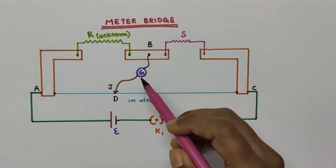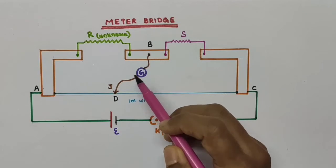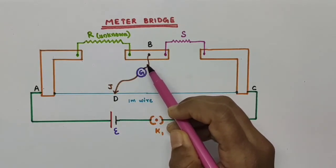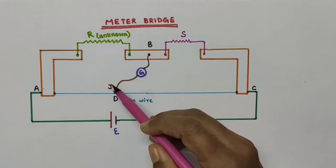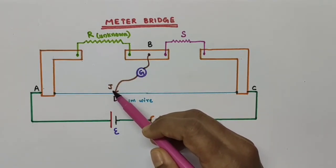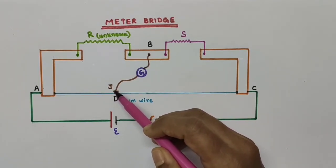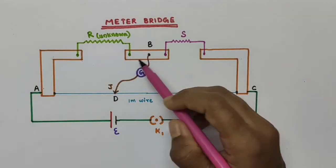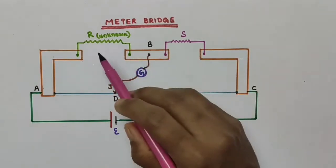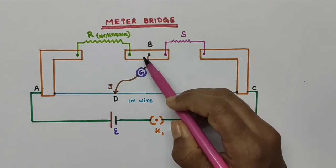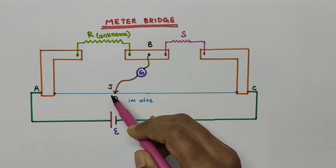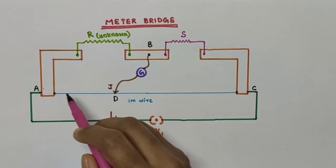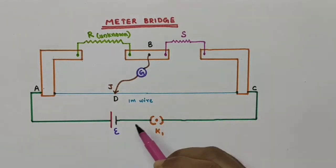One end of the galvanometer is actually connected to a jockey. This J represents the jockey. The other end of the galvanometer is connected to the metallic strip which is midway between the two gaps. This jockey is actually a metallic rod whose one end has a knife edge which can slide over the wire to make an electrical connection.